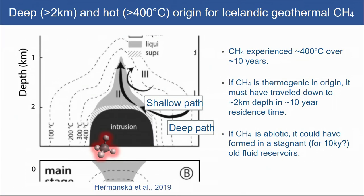Going back to what we see in Iceland: the methane experienced about 400 degrees centigrade for about 10 years. If the methane is thermogenic — meaning formed somewhere else — then it must have traveled through this very high-temperature region very close to a magmatic intrusion and come back for us to analyze. If the methane is abiotic, it could have been formed in a somewhat stagnant pocket water body, because methane formation might take about 10,000 years.